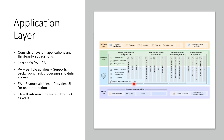Finally, we have the application layer. This layer supports both system applications and third-party applications. There are two key terms: PA (Particle Abilities) and FA (Feature Abilities). Particle Ability supports background task processing and data access, while Feature Abilities provide the UI for user interaction. FA may also retrieve information from PA.